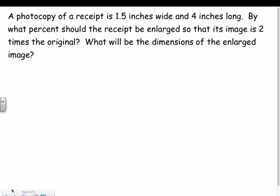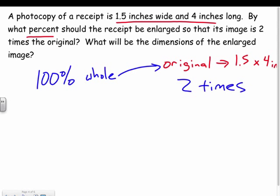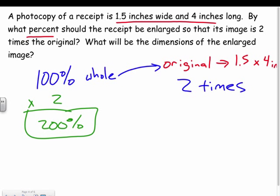Well, let's get a story problem without a picture here. So a photocopy of a receipt is 1.5 inches wide and four inches long. By what percent, that's the first thing we're doing, should the receipt be enlarged so that its image is two times the original? And then what will the dimensions be of the enlarged image? So the original image, here's the dimensions of the original. We got a 1.5 by 4 inch receipt. And we want to enlarge it two times as big, two times as big. Well, think about percentages. A hundred percent would be the whole image, the whole original image. So a hundred percent of the image is the original. Well, if I want it two times as big, what percent would we do? Well, let's just multiply that by two. There you go. So we want 200 percent of the original image. Nothing too difficult.